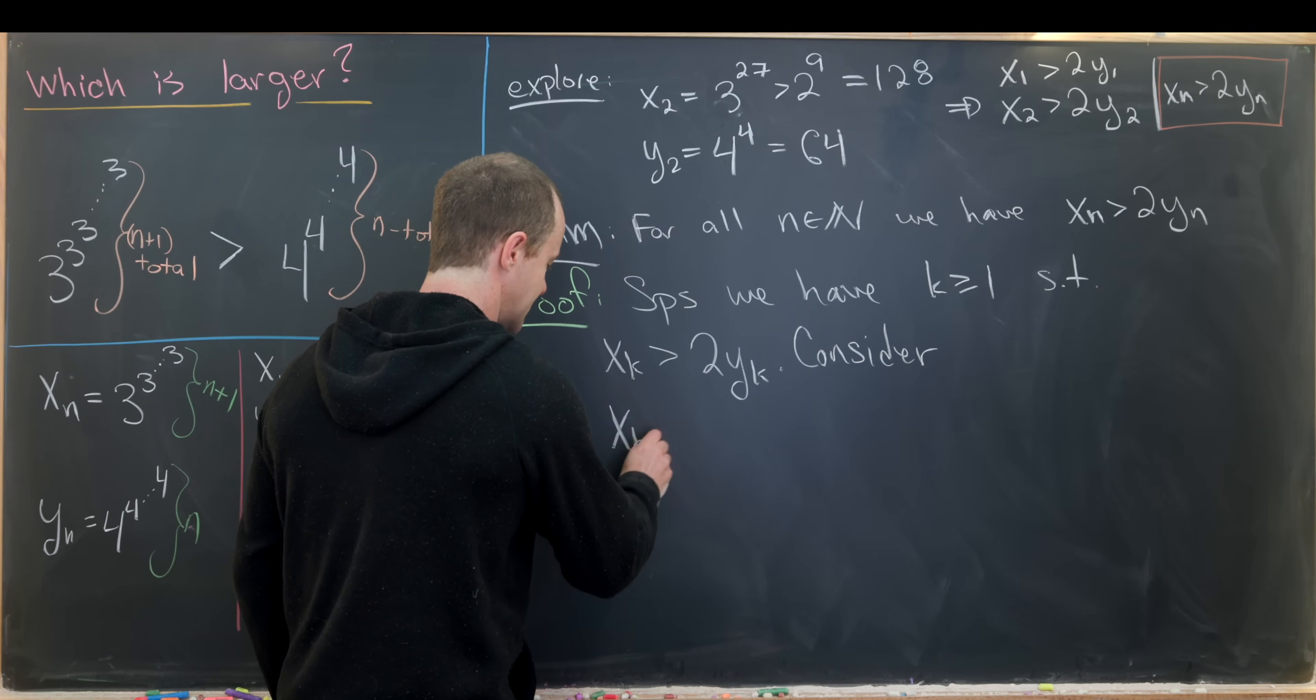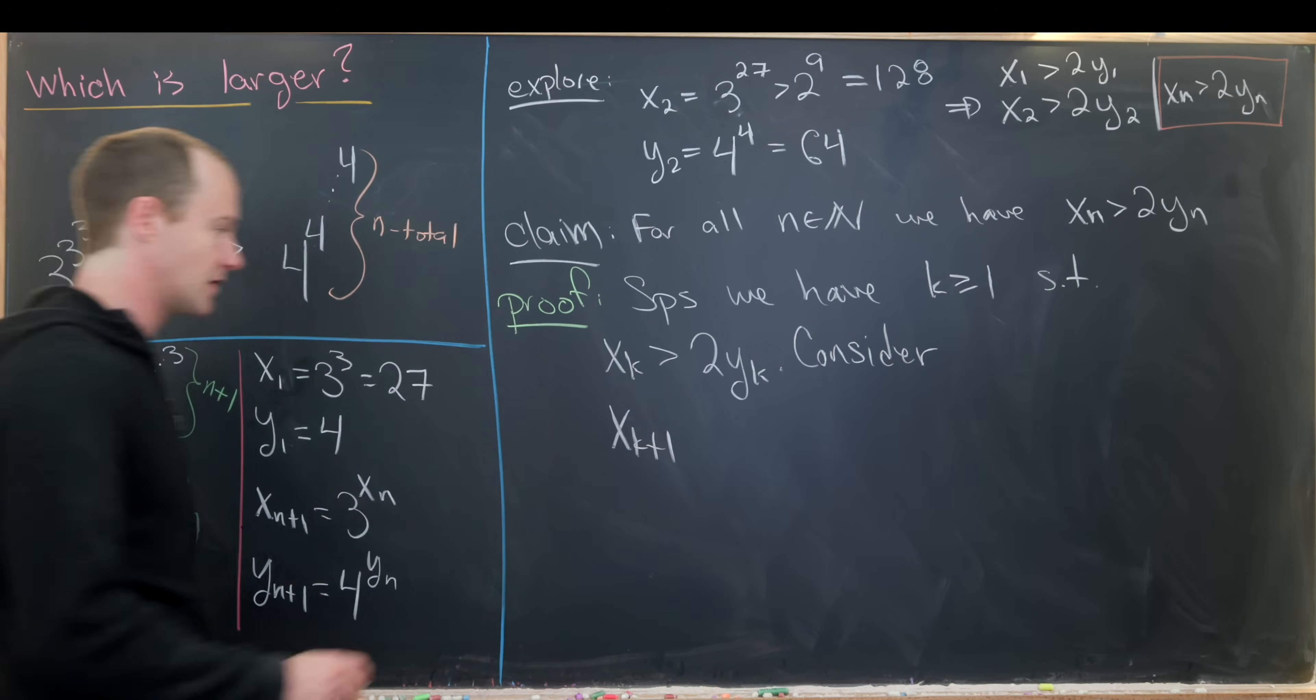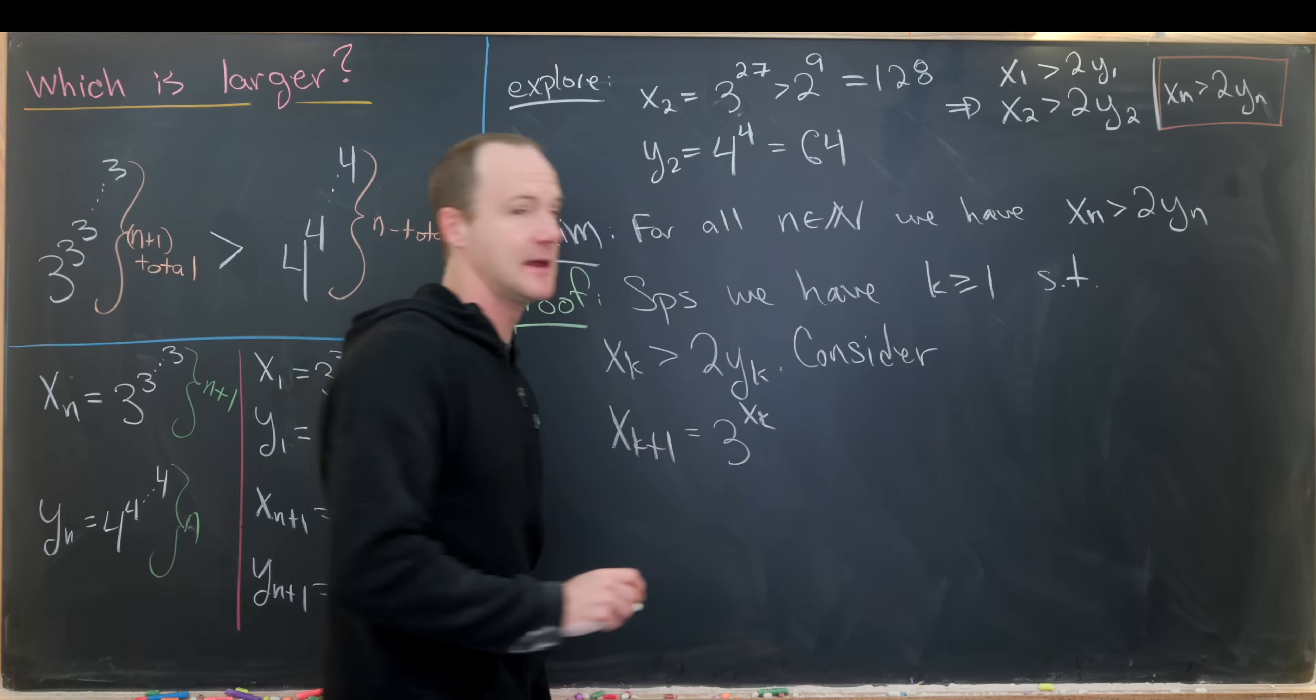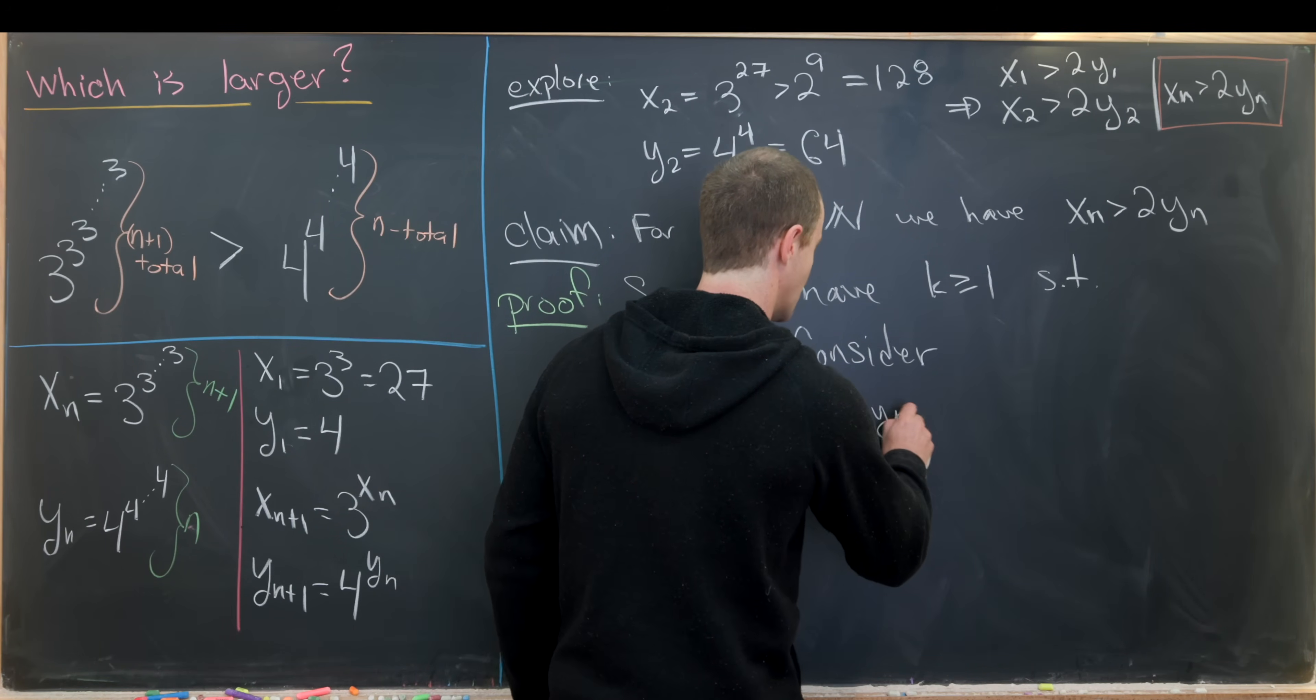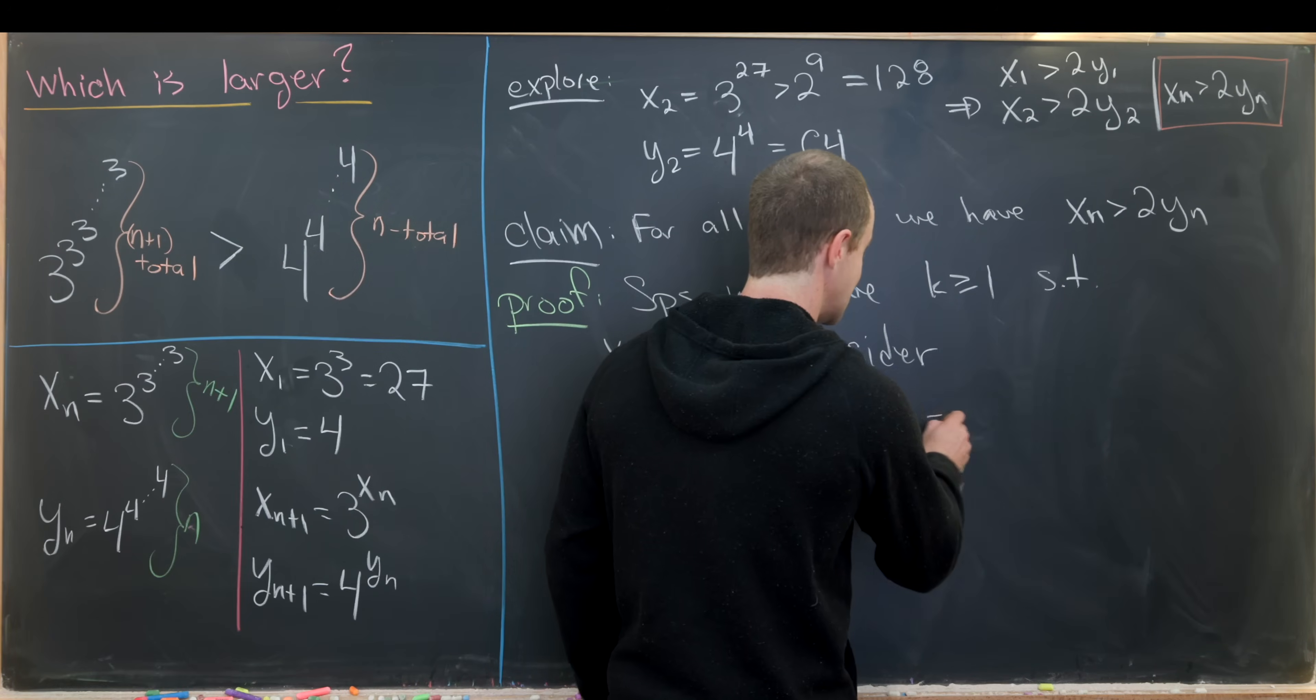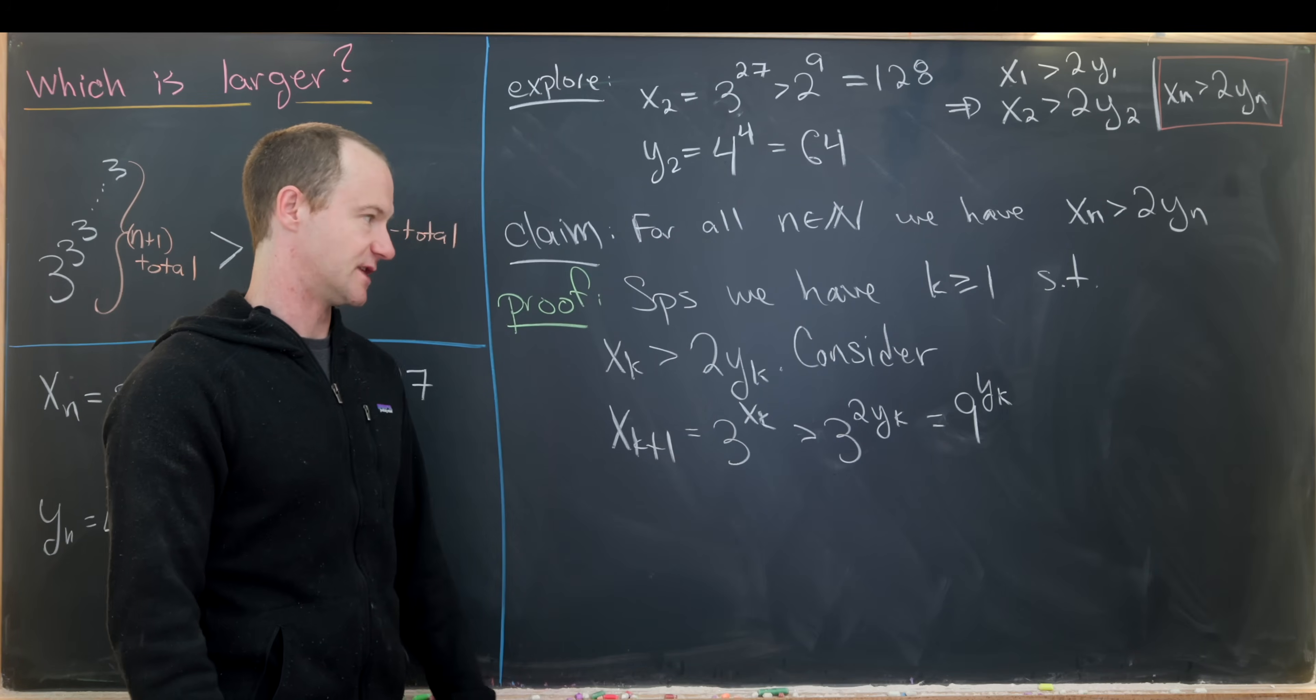So we have xk+1, but by our recursion we see that that's equal to 3 to the xk. But now that's going to be bigger than 3 to the 2 times yk because of our induction hypothesis. But that's equal to 9 to the yk, just by exponent rules.